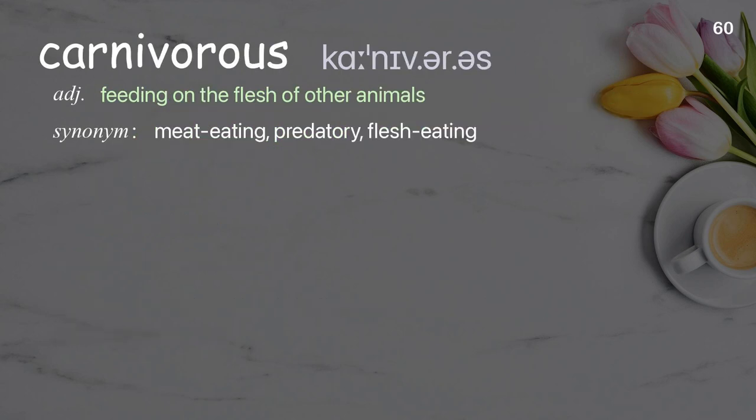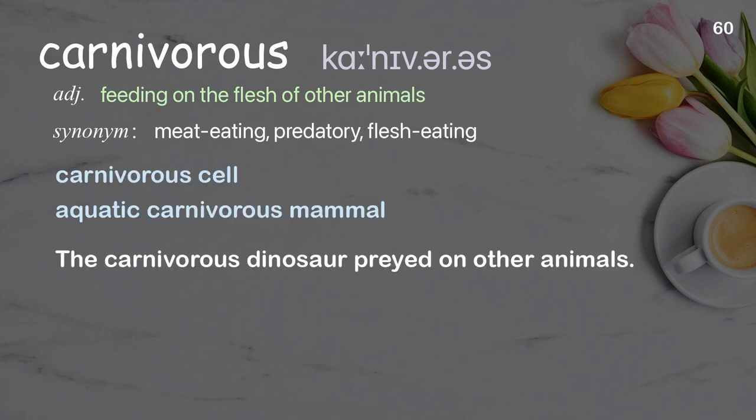Carnivorous: feeding on the flesh of other animals. Examples: carnivorous cell, aquatic carnivorous mammal. The carnivorous dinosaur preyed on other animals.